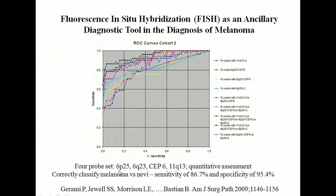The four-probe set covered FISH for 6P25, 6Q23, CEP6 — that's the chromosome enumeration probe for the centromere, so you can confirm you have chromosome 6 — and 11Q23. Importantly, one of Bastian's points was that histology is subjective, and two different people can look at the same case and have different opinions. But when you quantify FISH probes, it's a quantitative assessment that can be standardized and used by all people.